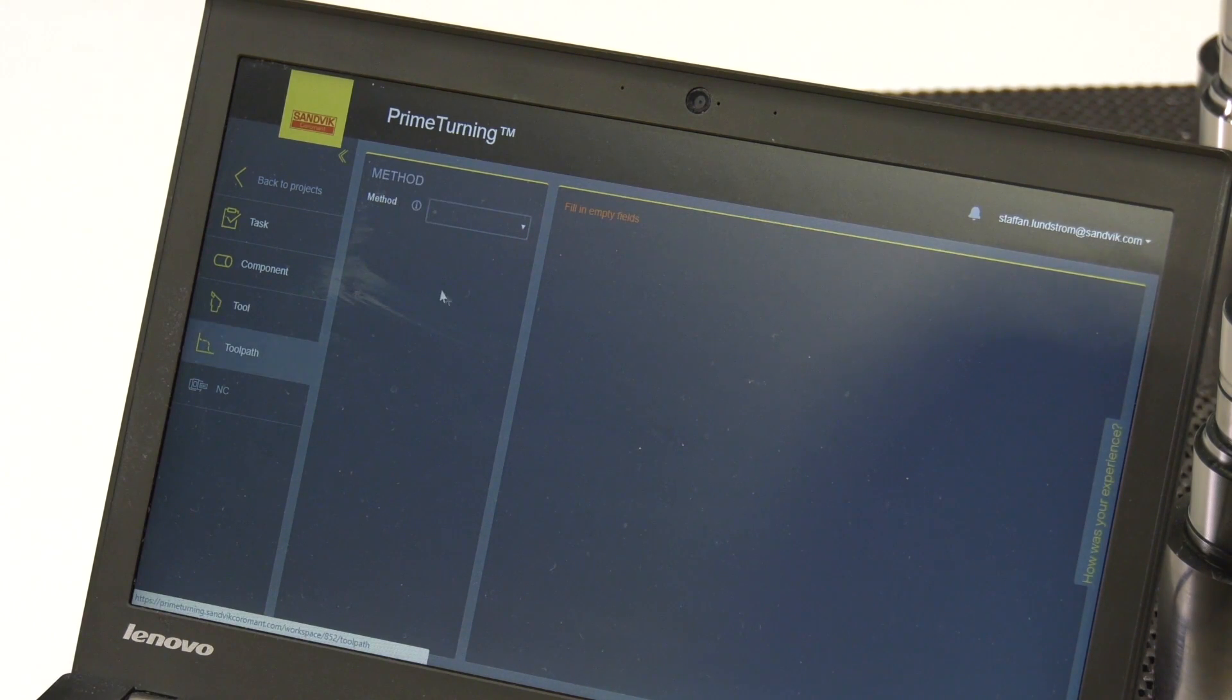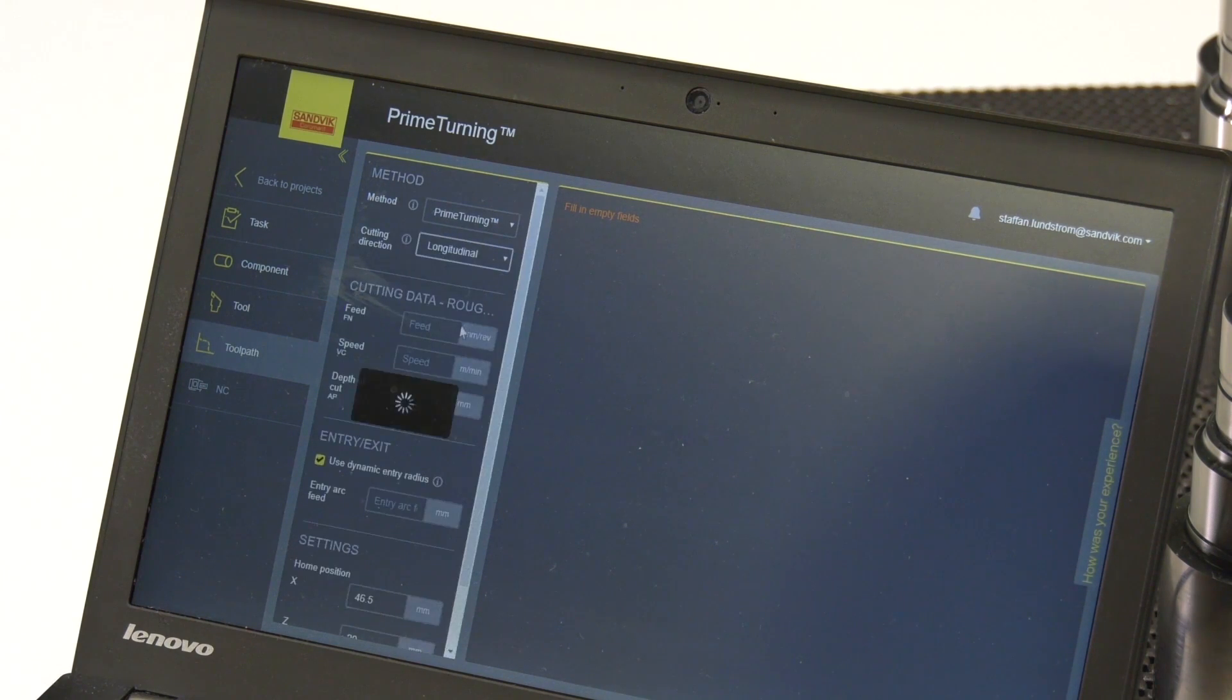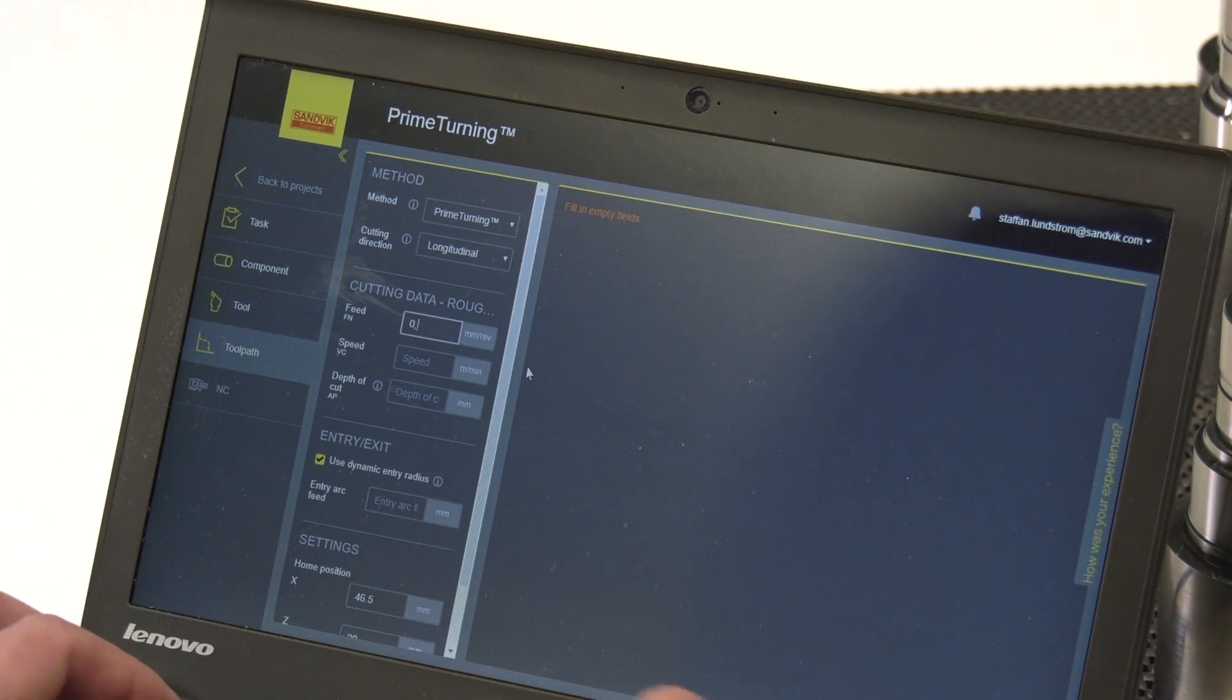And then we go further to the toolpath. At this stage it is empty fields. So we have to start by defining the cutting data. But very soon the system will provide start values for cutting data. So we will run 0.4 in feed, 175 meters, 2mm depth of cut. And also the specific entry is quite important for prime turning to have a smooth entry into the component.